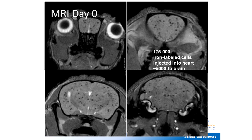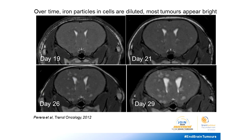We image them on day zero and follow them for about a month. This model mimics the blood spread of cancer cells in the body. On the first day, you can see all the black dots in the mouse brain — after injection, these cells become arrested in the brain, with about three to five percent lodging there. Over time at days 19, 21, 26, and 29, the cells are dividing, so there are fewer iron particles per cell, and most cells can no longer be seen. On day 29, many tumors appear bright, partly because of the fluid associated with them.